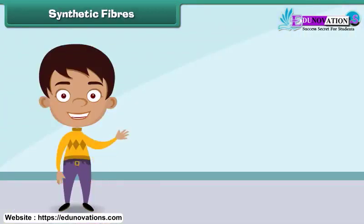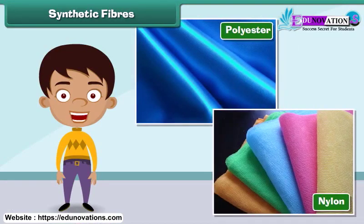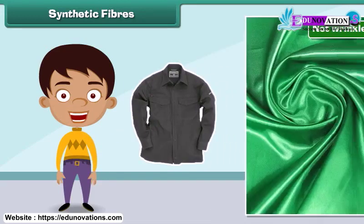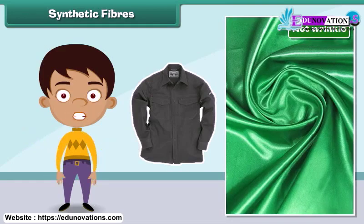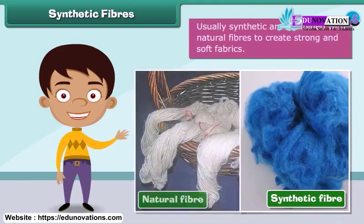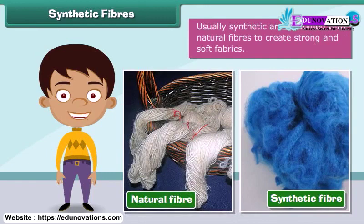Synthetic fibers are man-made. Nylon and polyester are examples of synthetic fibers. Fabric made from synthetic fibers is cheap, dries easily, and does not wrinkle. Usually, synthetic fibers are combined with natural fibers to create strong and soft fabrics.